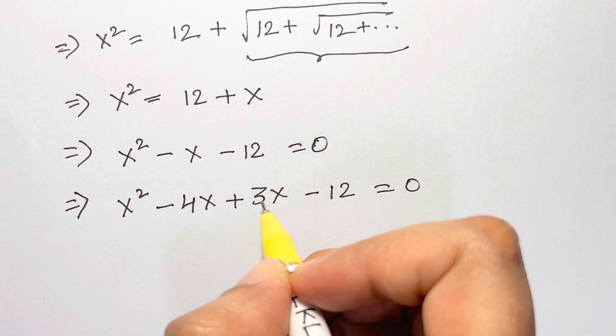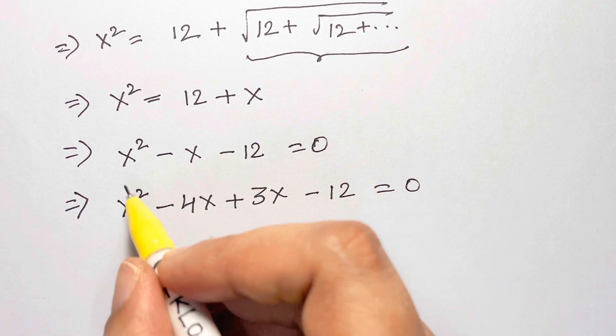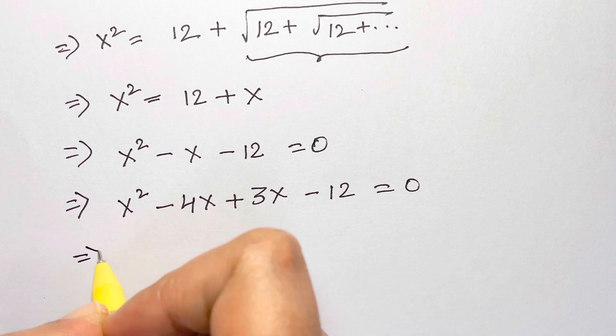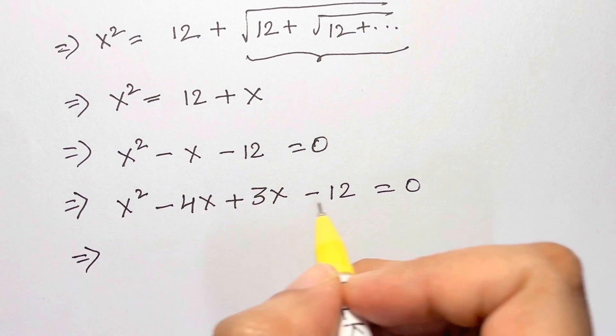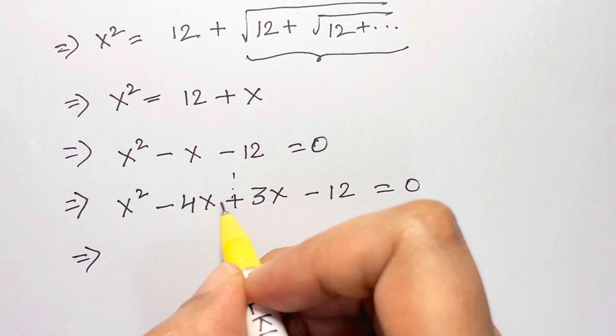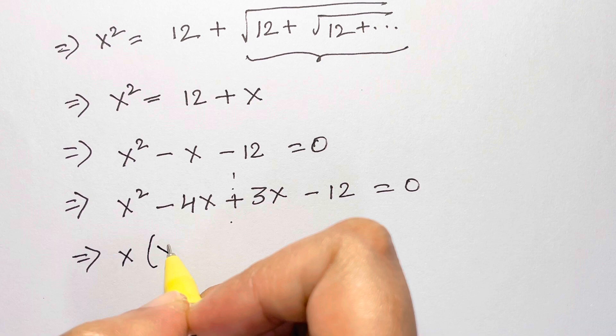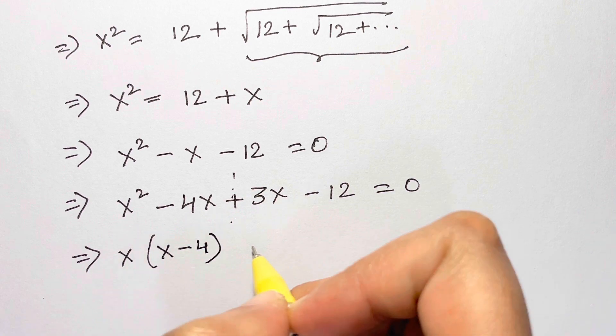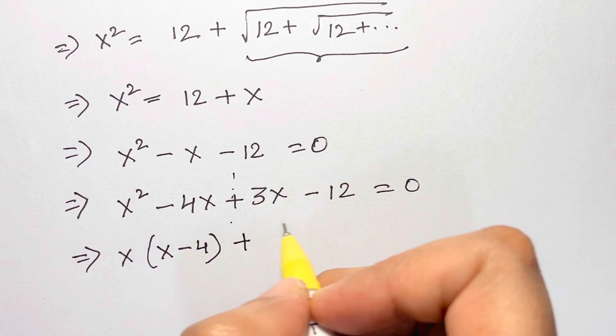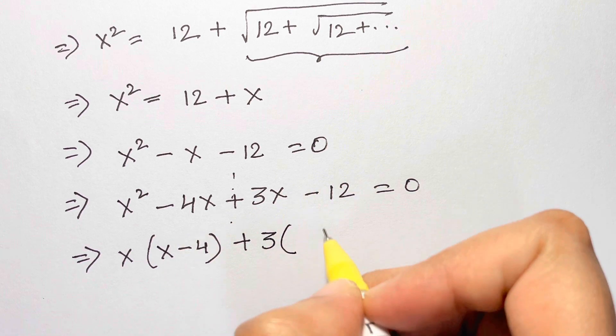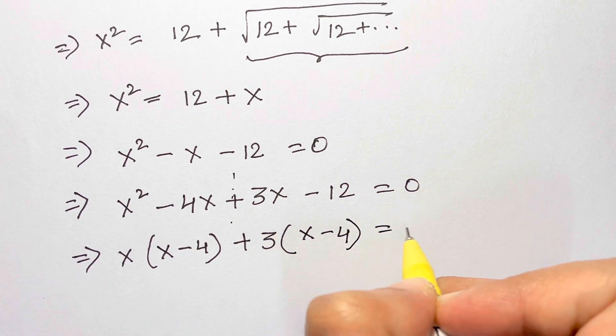Now let's see if we can split the equation. Yes, we can take out the greatest common factor from here, x, and we are left with x minus 4. Plus, from here we can take out 3, so we are left with x minus 4, which is equal to zero.